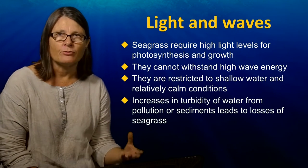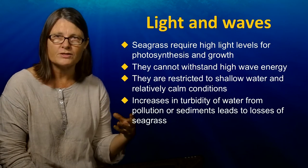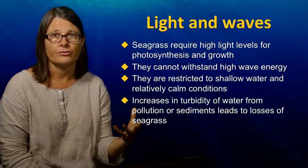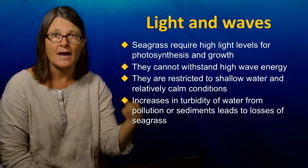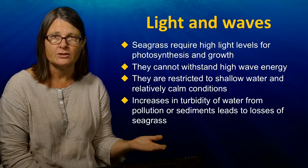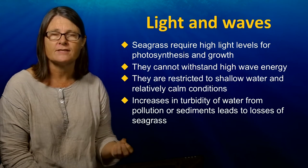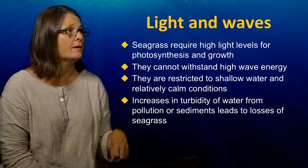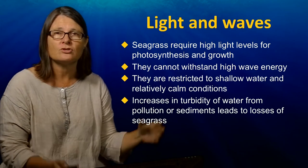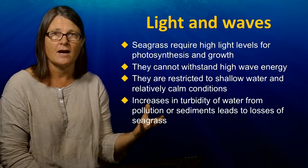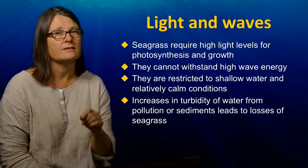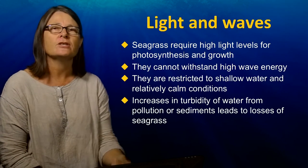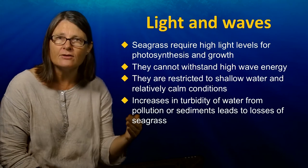To summarize: seagrasses require high light levels for photosynthesis and growth — this is important for later parts of the lecture. They can't withstand high wave energy, so storms and high-energy coasts are not where you find them; in those places you might find macroalgae such as kelps instead. These two physical constraints restrict seagrasses to shallow water and relatively calm environments. Increasing the turbidity of the water — through sediment or chlorophyll — tends to lead to a loss of seagrasses as they can't achieve the photosynthesis required for growth.